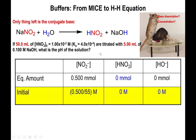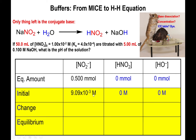Dividing 0.5 millimoles by 55 mL gives you molarity: 0.5 ÷ 55 = 9.09 × 10⁻³ M. This value is smaller than the initial concentration, as it should be, because you technically diluted the solution somewhat by adding the 5 mL of hydroxide.